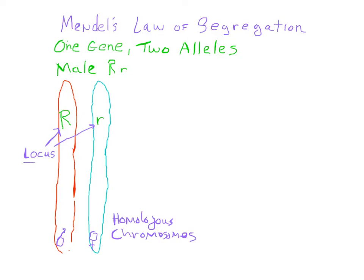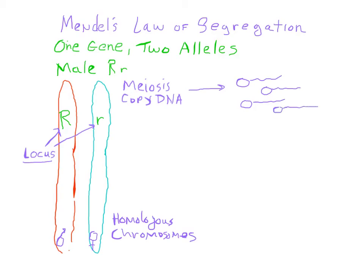Both alleles have the same locus — that's their address on the chromosome. In meiosis, the DNA is copied, and this would naturally lead to the formation of four different gametes. If this was a male, we would have four sperm.